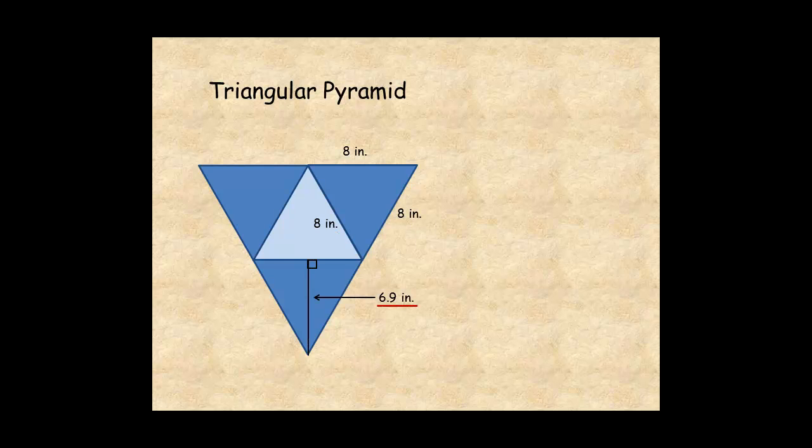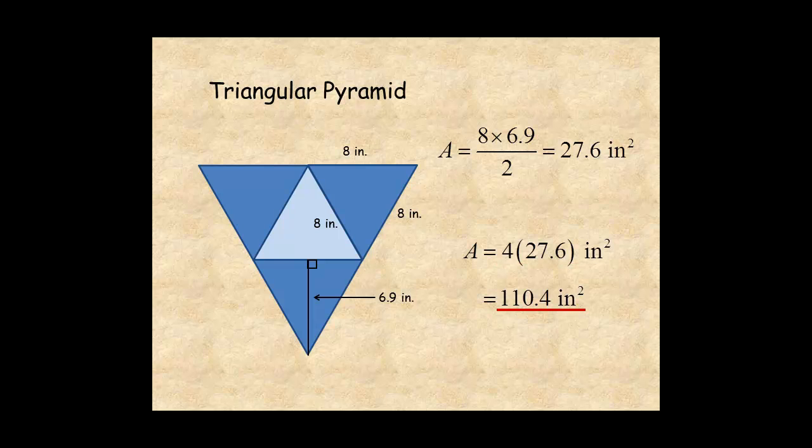The area of one triangle is 8 times 6.9 divided by 2, which is 27.6 square inches. Then multiply by 4, and the surface area of the pyramid is 110.4 square inches.